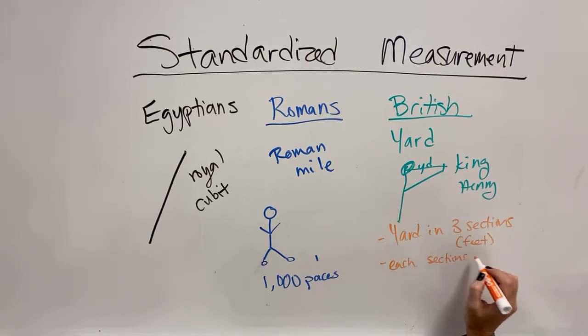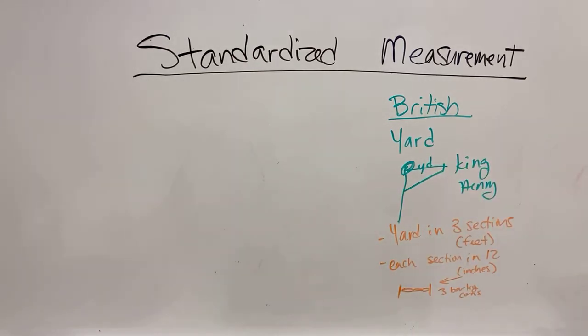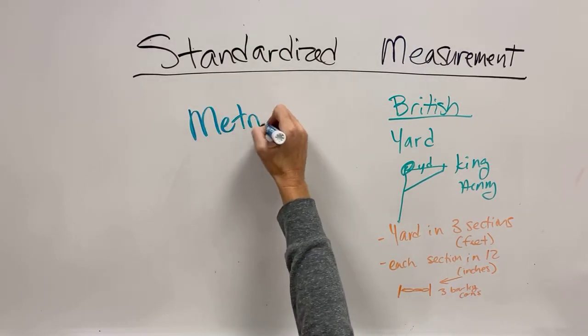He then said a yard should be further separated into three parts, which would eventually be called the feet. And each foot should be separated into 12 inches, which were just smaller sections. They weren't called inches yet. And an inch was then defined as three barley corns because seeds were a big way to measure things back then. As you can see, a strangely complicated system based on a king's measurement.